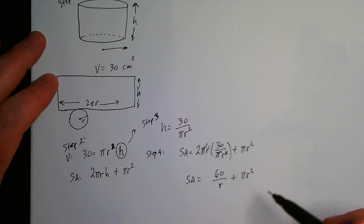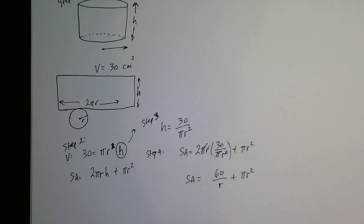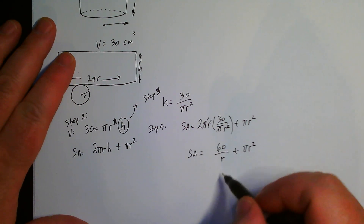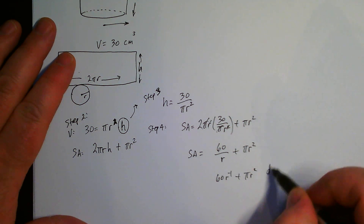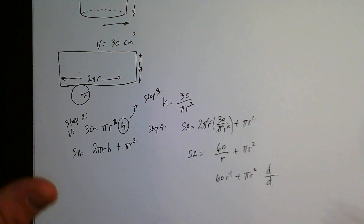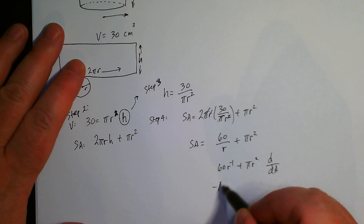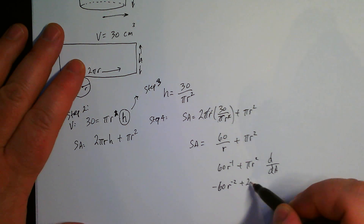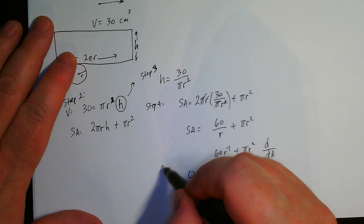Step 5 is to take the derivative of the surface area formula. We're going to differentiate 60r⁻¹ plus πr², and set it equal to zero to find the minimum radius. Rewriting 60/r as 60r⁻¹, the derivative is negative 60r⁻² plus 2πr.